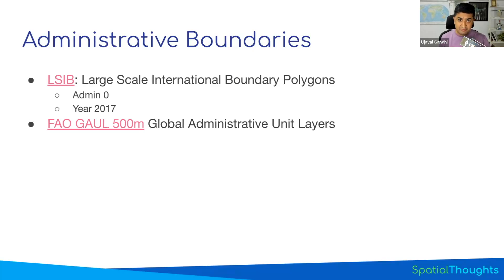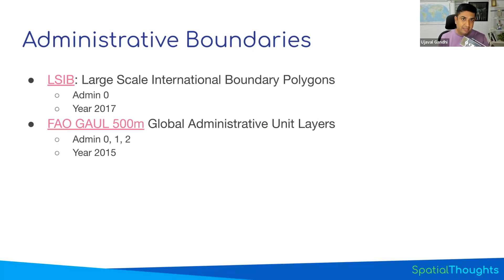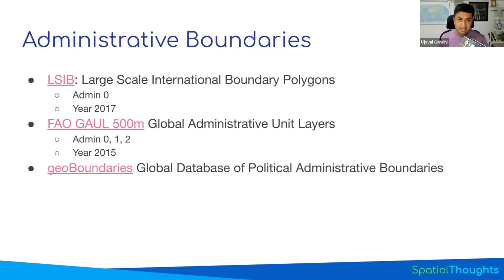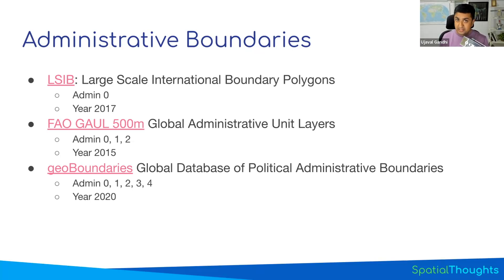There is the GAUL dataset, which is widely used and produced by the UN FAO program. It has both admin-1 and admin-2 boundaries, but they are a little old — for countries like India where admin-2 boundaries have changed a lot, they are not as useful. There's another dataset called GeoBoundaries, which has boundaries from admin-0 all the way up to admin-4. This is a pretty new dataset that I recommend — I've generally found them to be quite good and updated. So this is what we'll be using for this project.